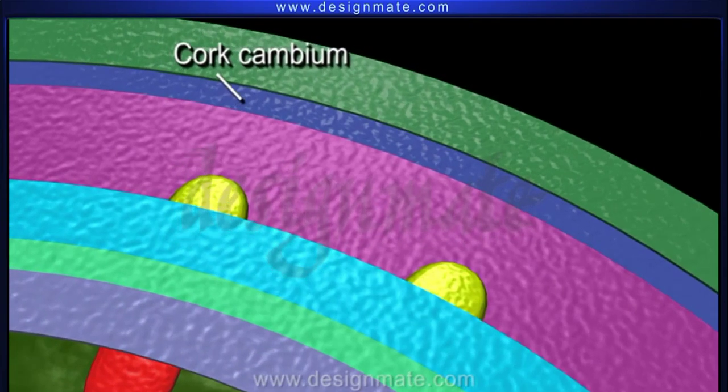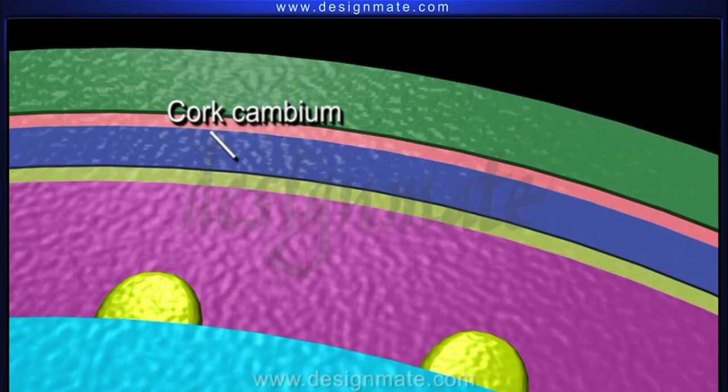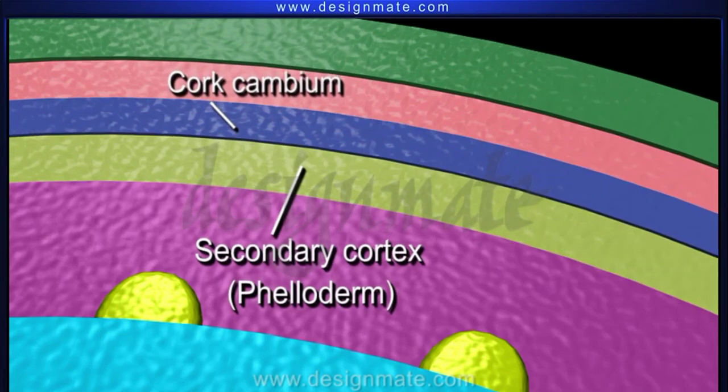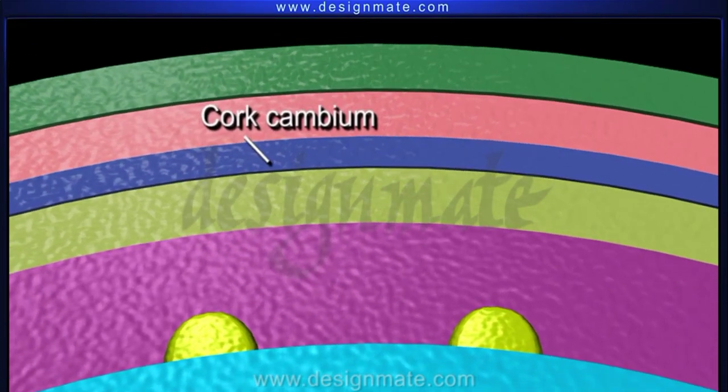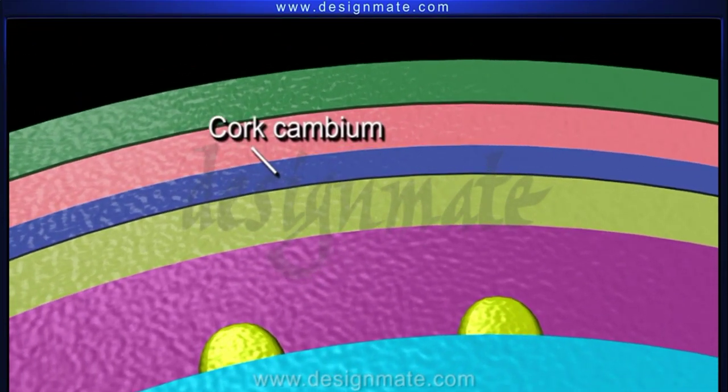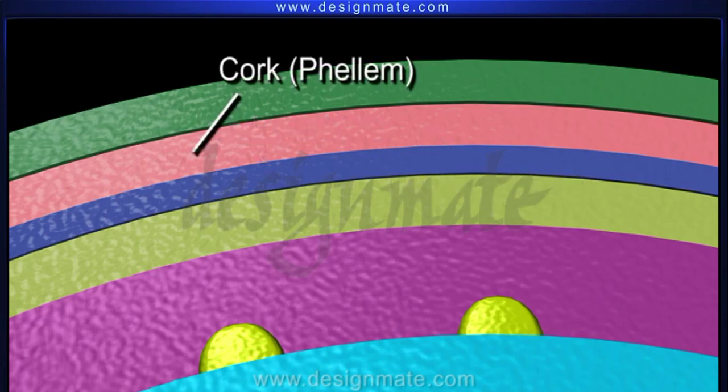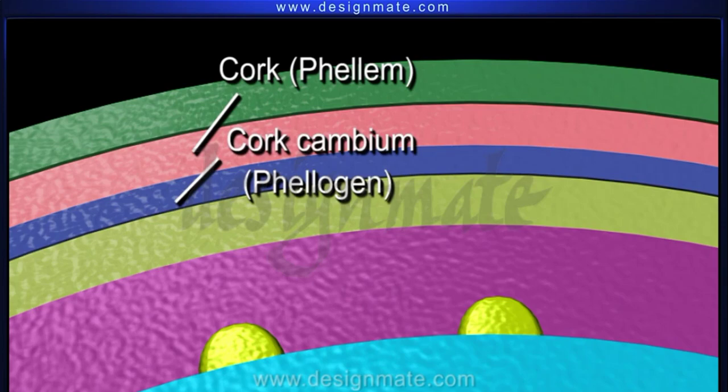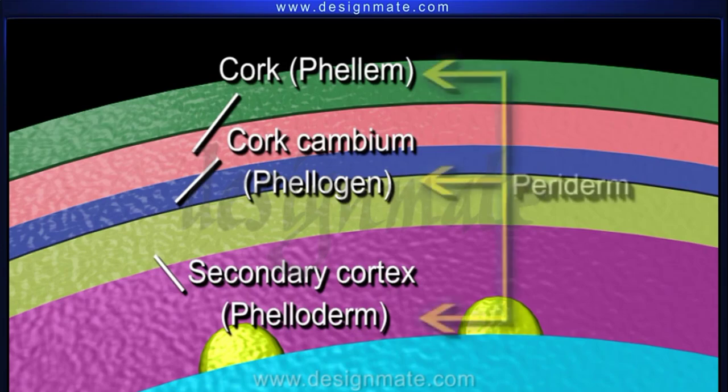The cork cambium cells in turn divide repeatedly to add cells on the inner side to constitute the secondary cortex or phelloderm, and to form cork or phellum on the outer side. The cork (phellum), cork cambium (phellogen), and the secondary cortex (phelloderm) are collectively known as the periderm.